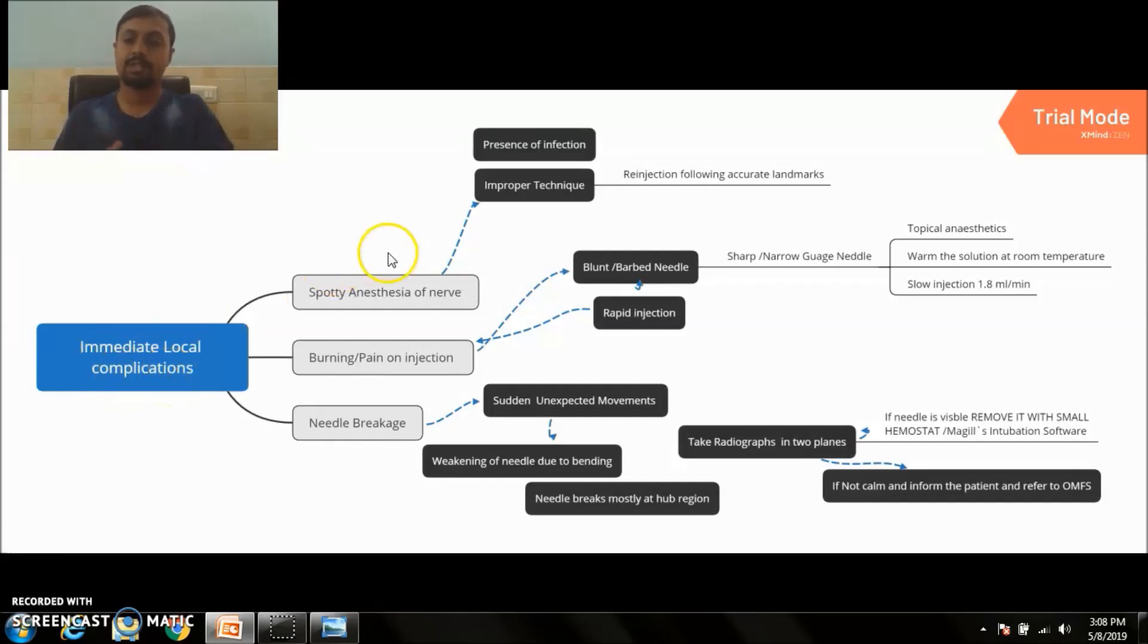First one is spotty anesthesia, that is inadequate soft and hard tissue anesthesia. It occurs because of two things: improper technique of LA administration, meaning you fail to follow proper anatomical landmarks, and injection into inflamed or infected tissue. In infected tissue, the pH is acidic, so deprotonization of local anesthetic solution will not occur. Your ions will not be able to reach the endoneurium, and you will get spotty anesthesia. If it occurs, you can follow supplemental injection techniques like periodontal ligament injection or intrapulpal anesthesia, and you can re-inject following proper accurate anatomical landmarks.